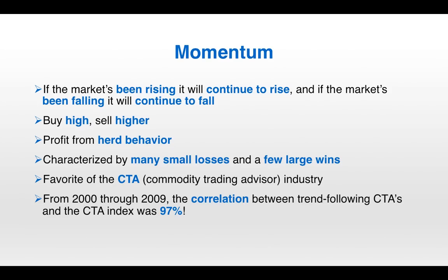We're going to begin with momentum. Momentum follows the assumption that if the market's been rising, it will continue to rise, and if the market's been falling, it will continue to fall. It is a buy high, sell higher type of trading strategy with the goal of profiting from herd behavior. It's characterized by many small losses and a few large wins. The momentum trader is looking for the big move. Big moves don't happen that often, so there's going to be a lot of small losses, but the momentum trader is hoping that a handful of large wins will dominate a multitude of small losses.